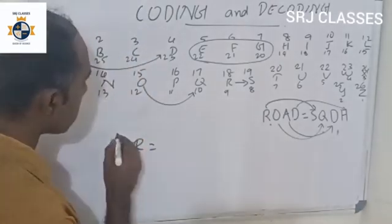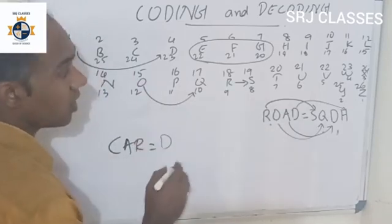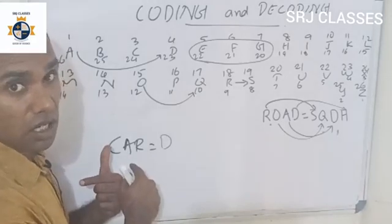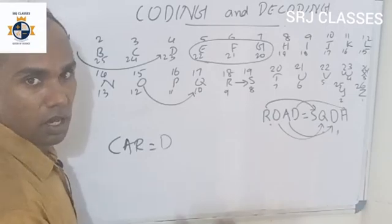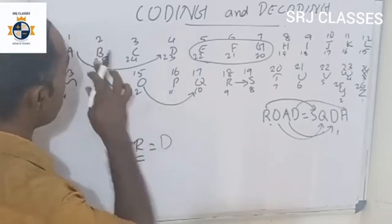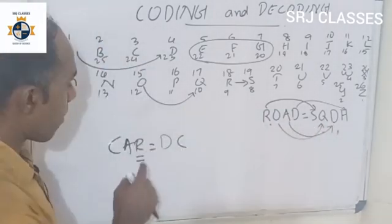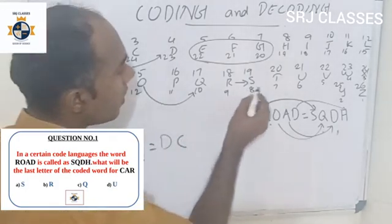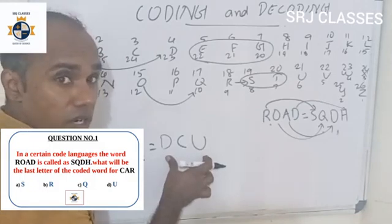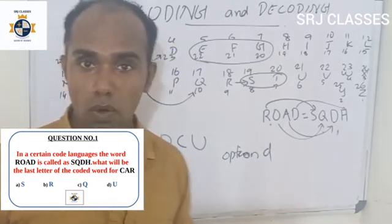So where is C? The first letter C maps to D. What is C? C is A — no, the second letter A maps to B. Then A becomes B. The third letter R — R has two letters gap, R maps to S. The second letter is U — which is D. So the full coded word is derived by shifting each letter by one position.